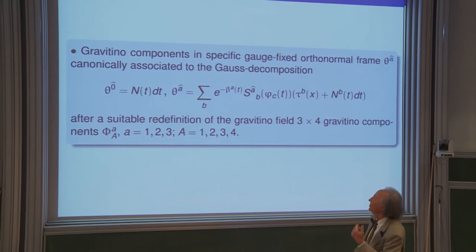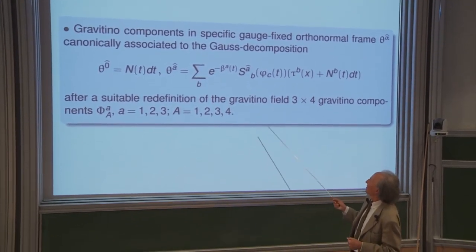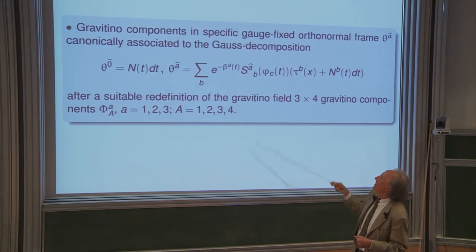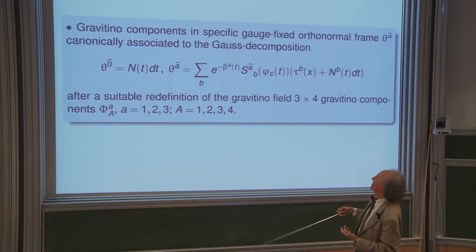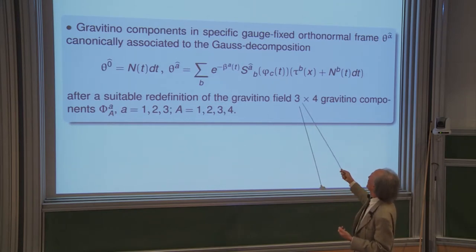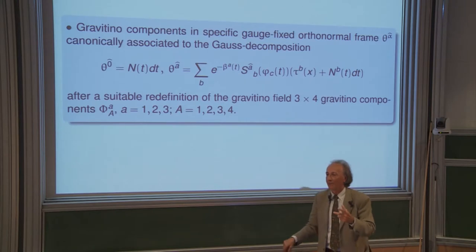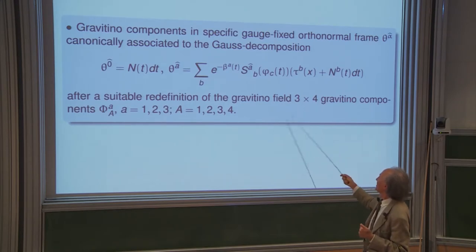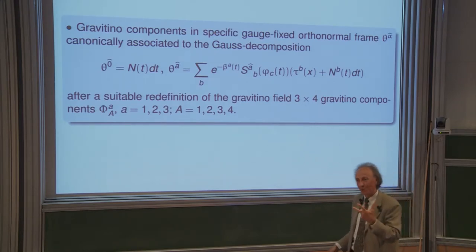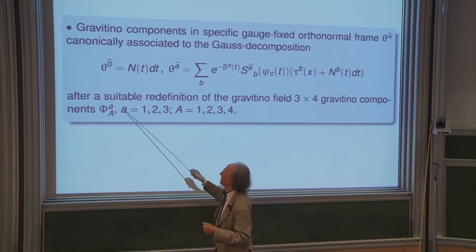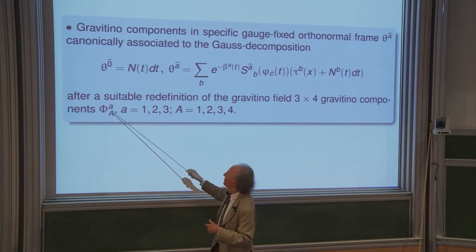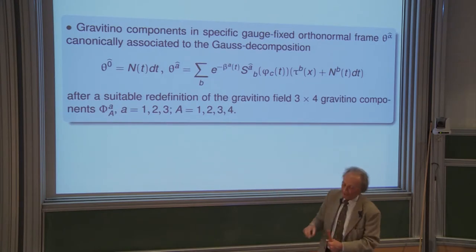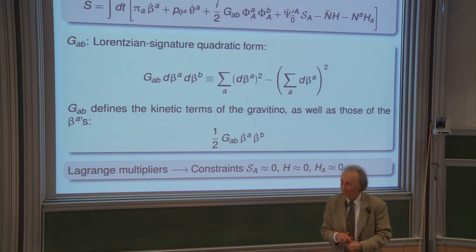Besides the bosonic degrees of freedom, there are also the fermionic degrees of freedom, which are the Gravitino components. We represent these in a special gauge-fixed frame. The Gravitino components carry one spinor index taking four values and a spatial index taking three values, giving twelve Gravitino components. After a transformation, these are represented by fermionic objects with an index A taking three values and a capital index A taking four values.